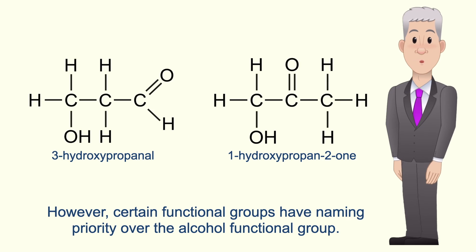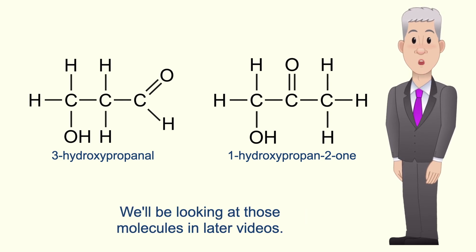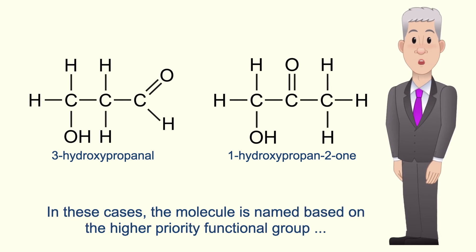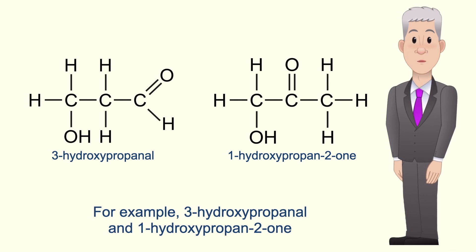However certain functional groups have naming priority over the alcohol functional group — for example aldehydes, ketones and carboxylic acids. We'll be looking at those molecules in later videos. In these cases the molecule is named based on the higher priority functional group, and the alcohol group is shown by the prefix 'hydroxy'. For example 3-hydroxypropan-al and 1-hydroxypropan-2-one.